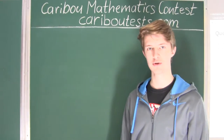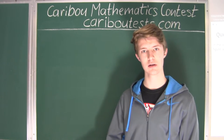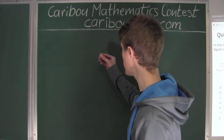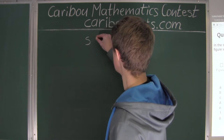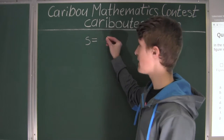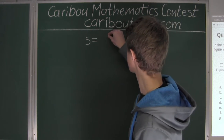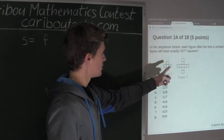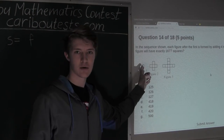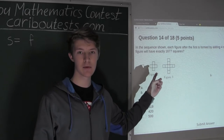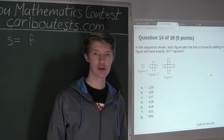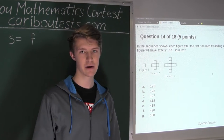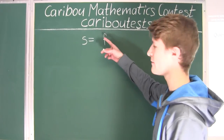We need to introduce variables: S for the number of squares, and F for the figure number. As we can see from the question, as the figure number increases by 1, the number of squares increases by 4. So the number of squares grows four times as fast as the figure number, meaning we must give F a coefficient of 4.